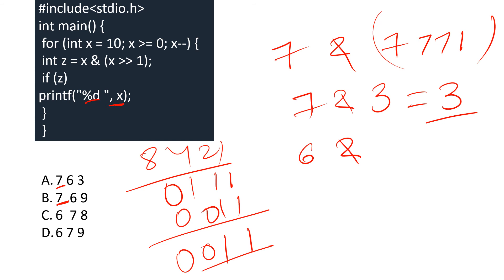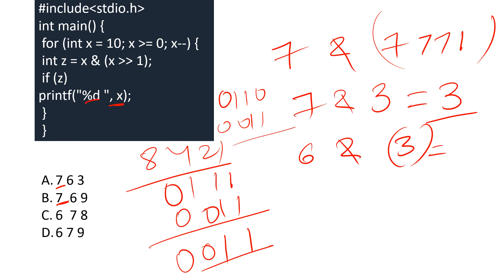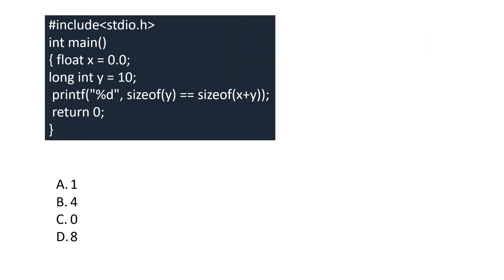For x = 6: binary is 0110. Right-shifted by 1 gives 0011 = 3. Then 6 AND 3 = 0110 AND 0011 = 0010, which is non-zero. So x = 6 is also printed. Since we're running from 10 down to 0, and checking each, the final answer includes values where AND is non-zero. Option A is the correct answer.